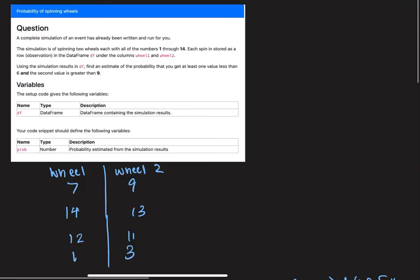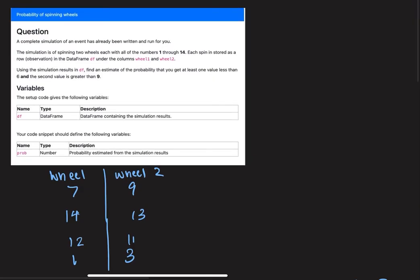So our data frame is going to look something like this. We're going to have two columns, wheel 1 and wheel 2, and each row is going to be a simulation. So the first time we got 7 in wheel 1, 9 in wheel 2, then 14, 13, etc. So we want to find the probability that at least one value is less than 6 and the second value is greater than 9.